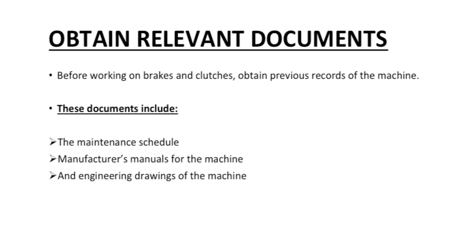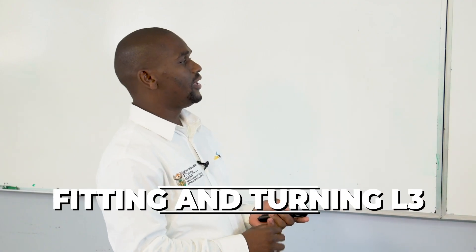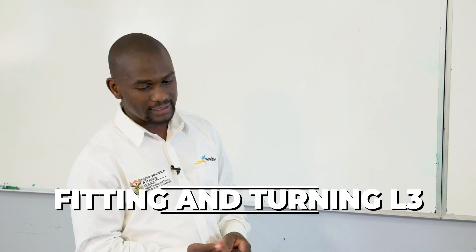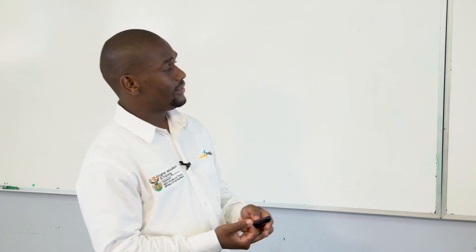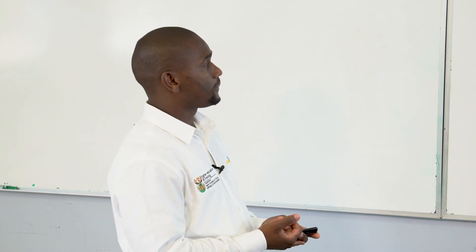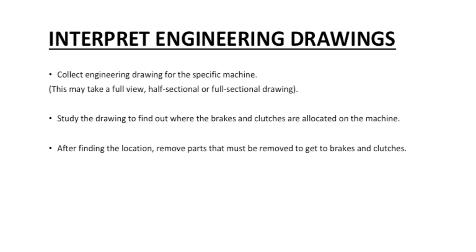Obtain relevant documents before working on brakes and clutches: obtain previous records of the machine. The documents include the maintenance schedule, the manufacturer's manual, and the engineering drawing of the machine. To interpret engineering drawings, collect the engineering drawing for the specific machine — this may include a full view, a half section, and a full sectional drawing. Study the drawing to find out where the brakes and clutches are located on the machine.